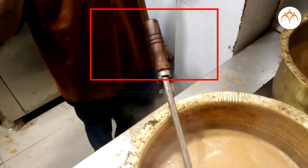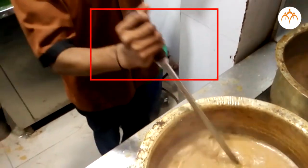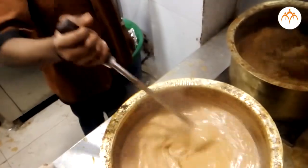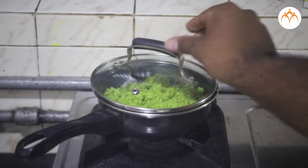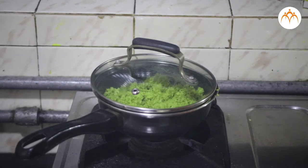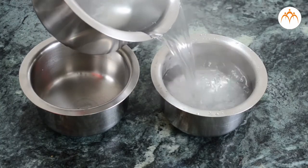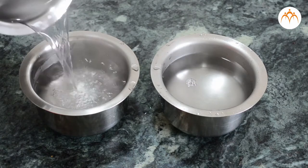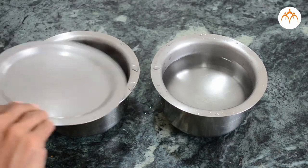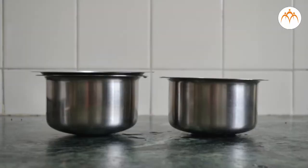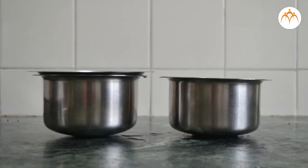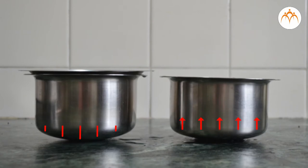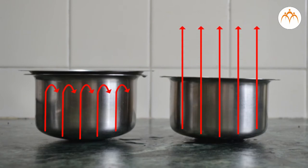This utensil has a wooden handle instead of a metal one — what could be the reason? Why does mother keep the lid on the containers with hot food before serving it? If I pour boiling water into two containers but keep a lid only on the first one, which one will remain warmer after some time? Can you guess why? We are trying to prevent heat from reaching certain areas or from escaping.